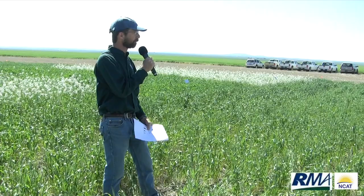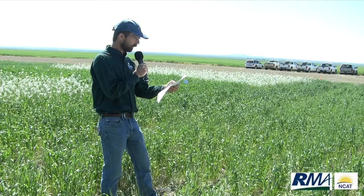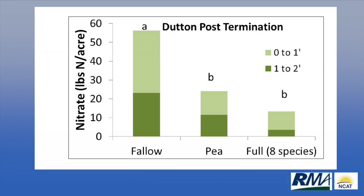The lower graph shows Dutton post-termination. There again we found more nitrate following fallow than following either pea or the full species mix. The same letter on pea and full species mix means there wasn't a significant difference. So we're growing more species but we did not use up more nitrate than following pea, and pea didn't leave more nitrate than following the full species mix.